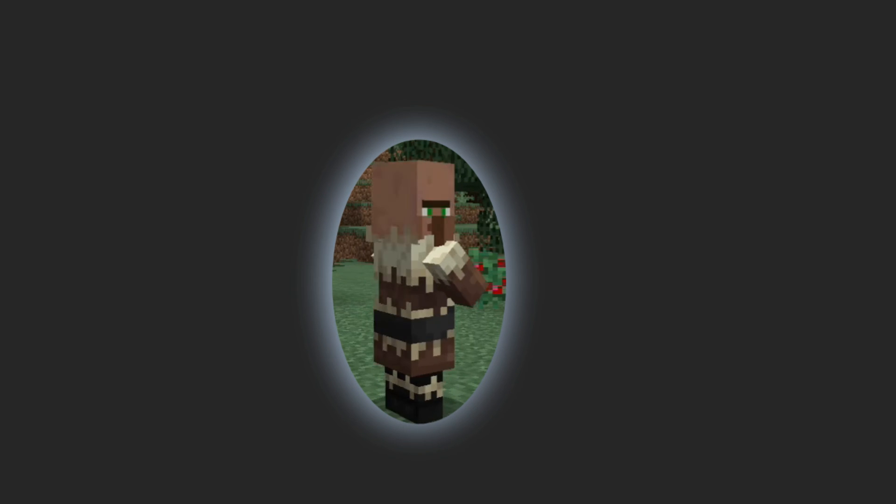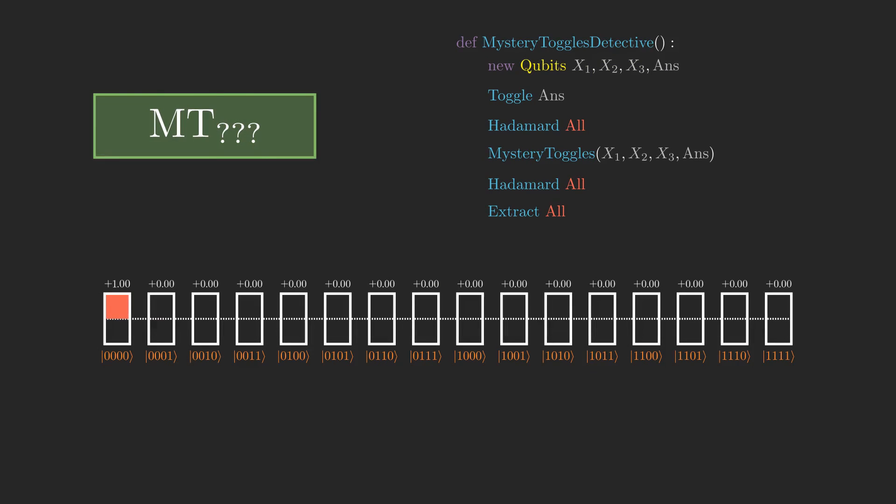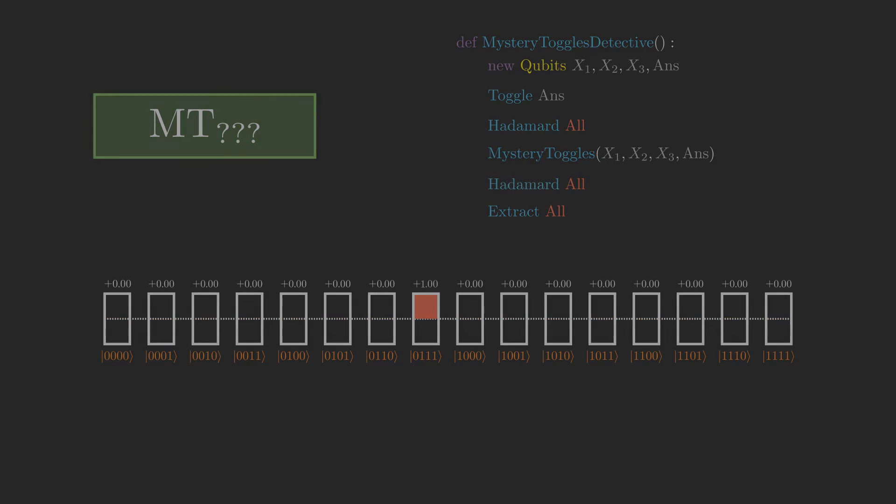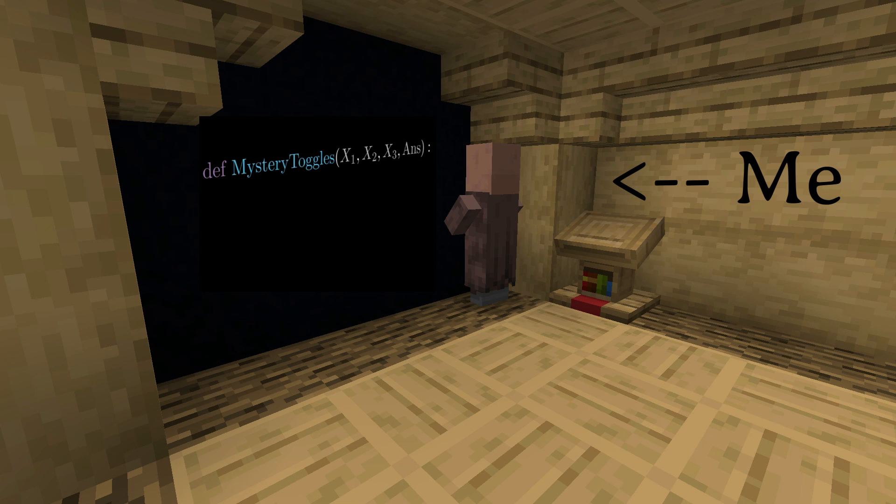We're not quite done here. We still haven't proven that this algorithm is correct, and I was able to come up with what I think is a pretty neat original proof. Not to say that nobody has done this before, but I haven't found it anywhere. To prove that mystery toggles detective works for any particular number of x's is simply a matter of simulating the code in all possible cases for mystery toggles and verifying that it works. But in general, if n is not fixed, we need something a bit more clever. I made the decision to defer this to a separate video though, so stay tuned, and I'll see you soon!